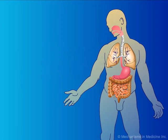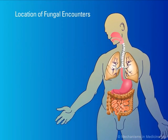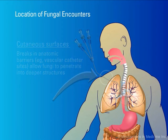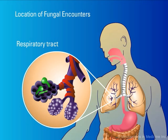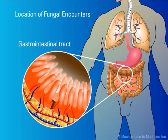Host defenses encounter airborne fungi, such as Aspergillus and the zygomycetes, in the respiratory tract, and Candida at cutaneous, mucosal, and gastrointestinal sites. Candida cells residing on the skin surface can invade the bloodstream through catheter insertion sites. Airborne fungi, such as Aspergillus and the zygomycetes, are inhaled into the lungs. Fungal spores that evade anatomical barriers ultimately reach the alveoli. Candida cells, which normally reside within the GI tract, can invade the peritoneum and bloodstream when there is mucosal injury.